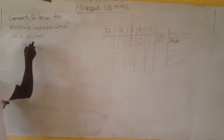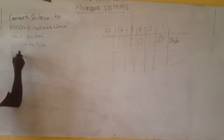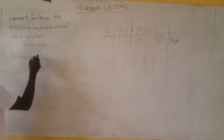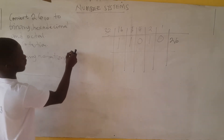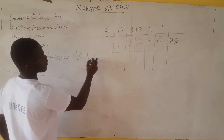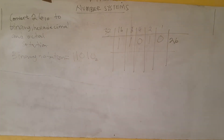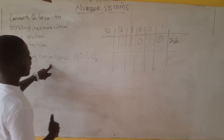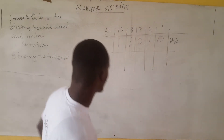So the solution: in binary notation, we have 1, 1, 0, 1, 0 — that is 11010 in base 2. Binary means we are expressing our number in base 2. We've converted it to binary, and from binary we can easily convert it to all the other bases we want.